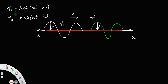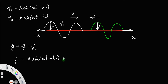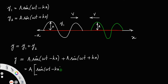The resultant displacement y = y1 + y2, according to the superposition principle. The total displacement is the sum of the individual displacements of the waves. So y = a sin(ωt − kx) + a sin(ωt + kx). Taking a common: y = a [sin(ωt − kx) + sin(ωt + kx)].